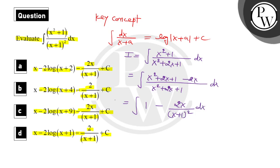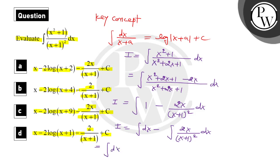After cancellation, this becomes ∫[1 − 2x/(x+1)²] dx. Now, splitting this we get: I = ∫dx − 2∫x/(x+1)² dx. Now for the x in the numerator, we write x = (x+1) − 1, divided by (x+1)², dx.